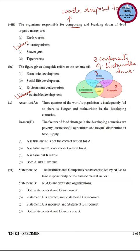The next question is based on assertion and reason. The assertion states that three quarters of the world population is inadequately fed, with hunger and malnutrition in developing countries. The reason given is that factors of food shortage in developing countries are poverty, unsuccessful agriculture, and unequal distribution of food supply. Both the assertion and reason are true, so option D is correct.